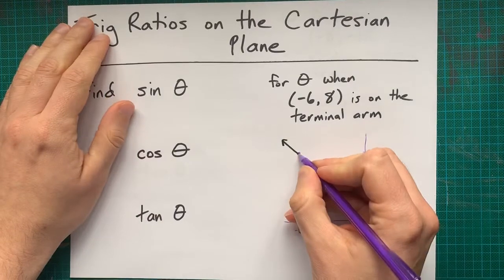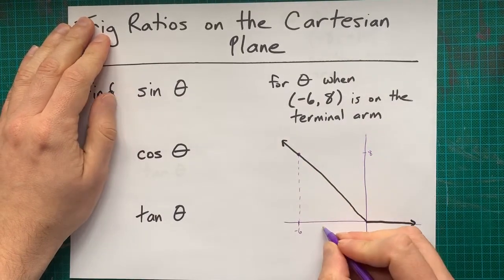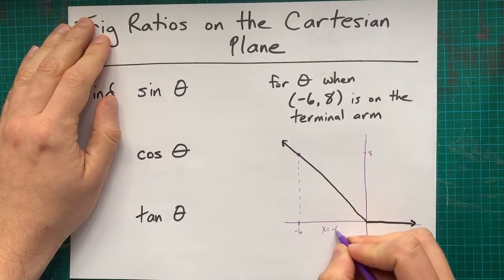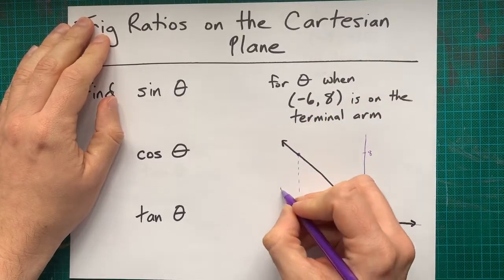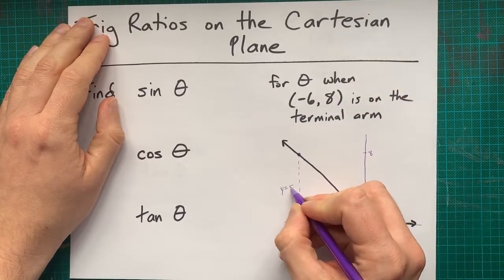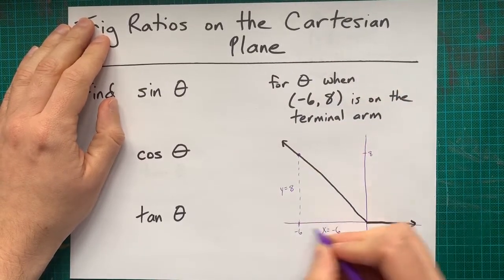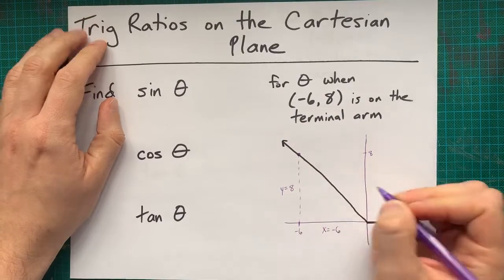But knowing that point lets you calculate a value of x, in this case negative 6, it was given to you in the point, a value of y, which is 8, also given to you in the point, but you're going 8 up to get to that point,